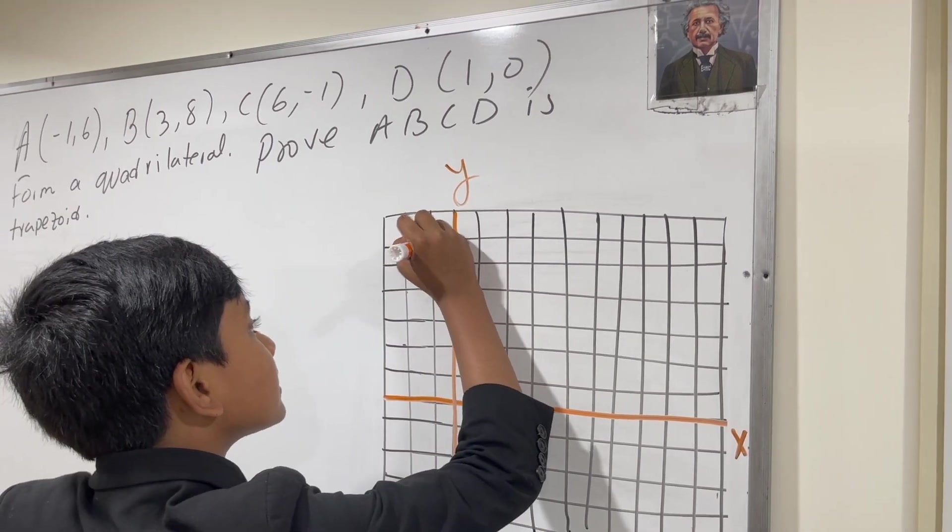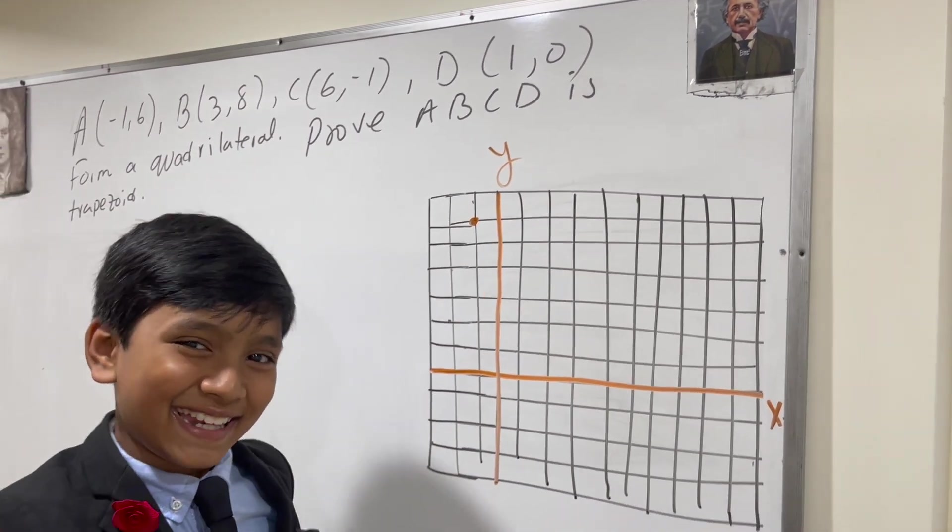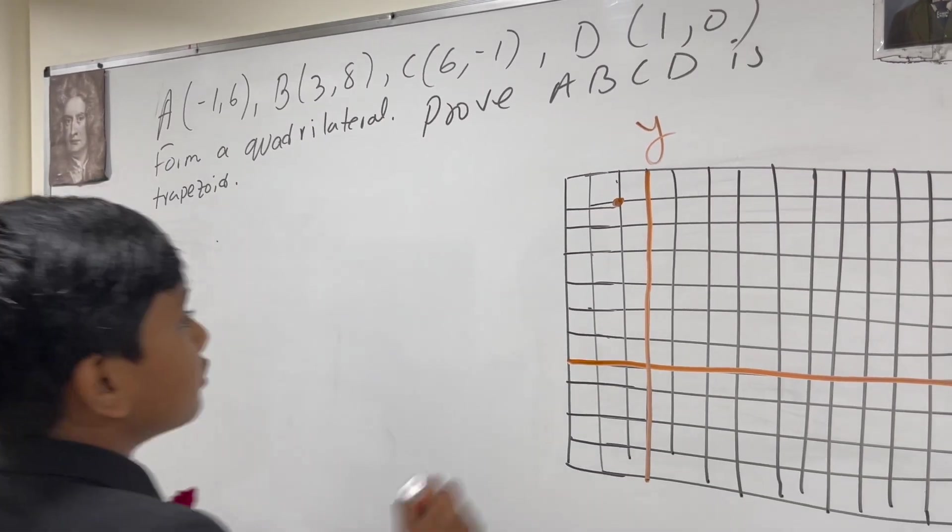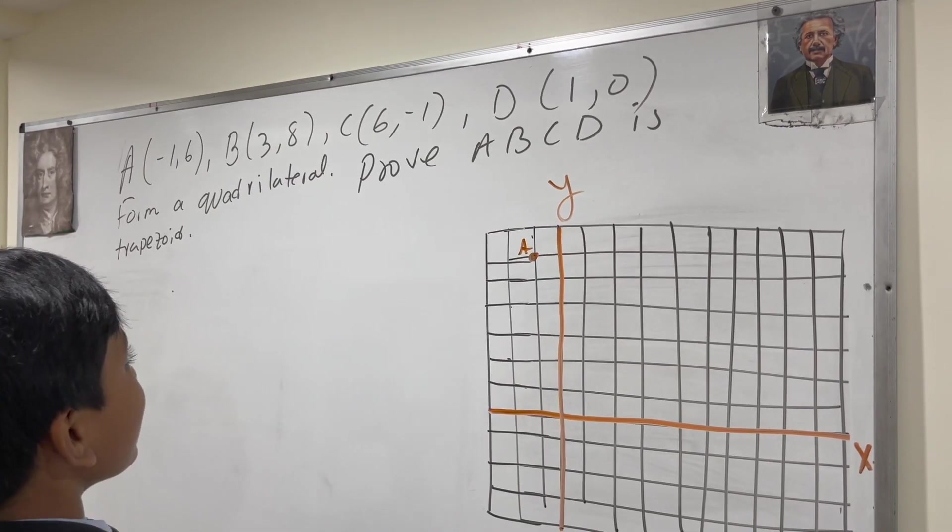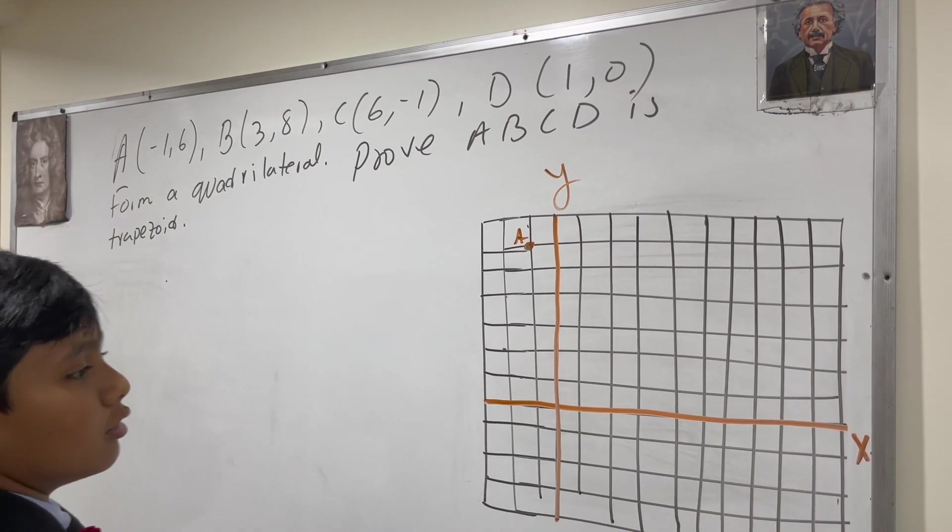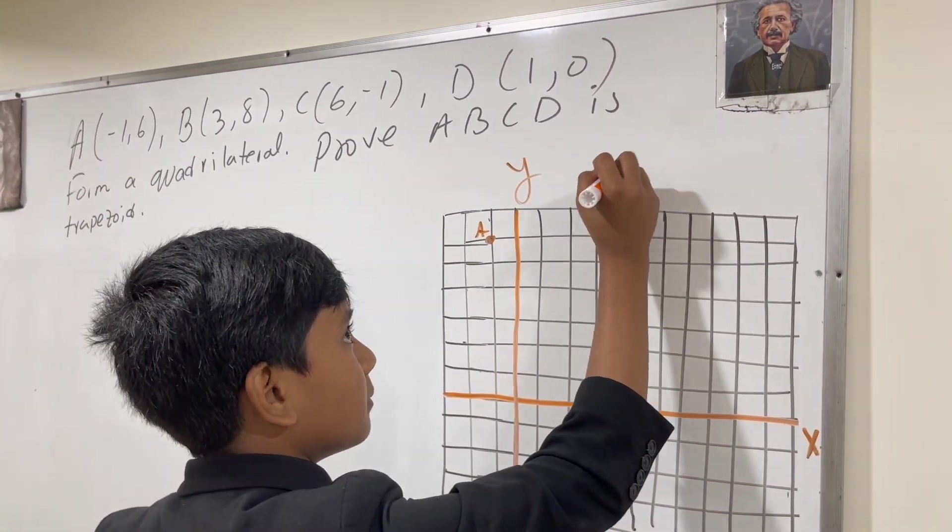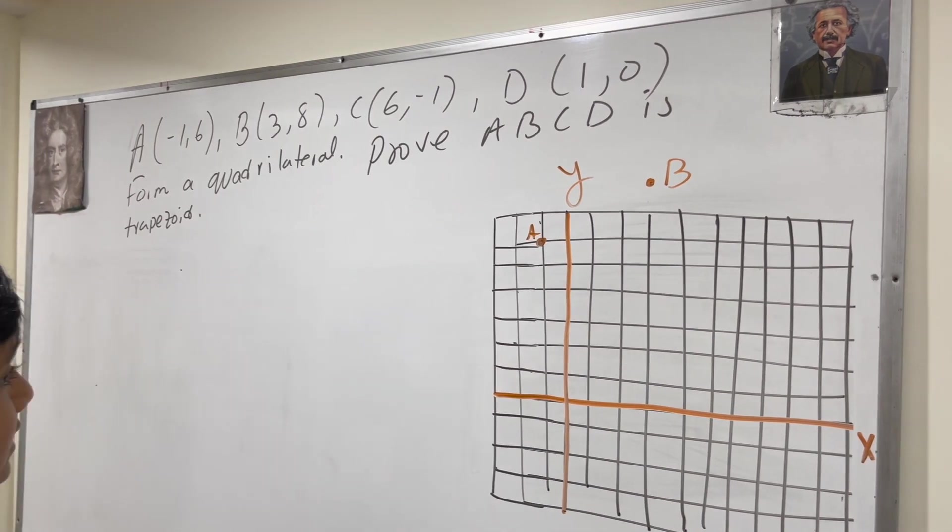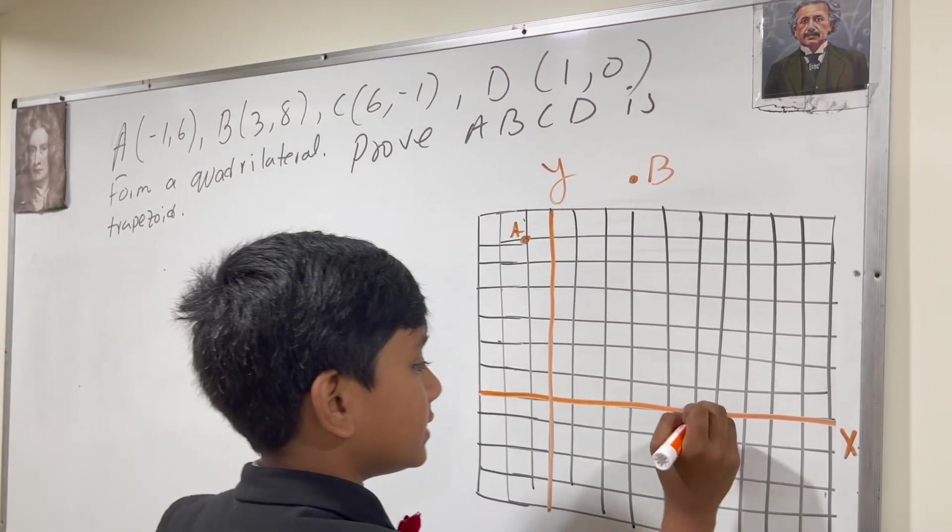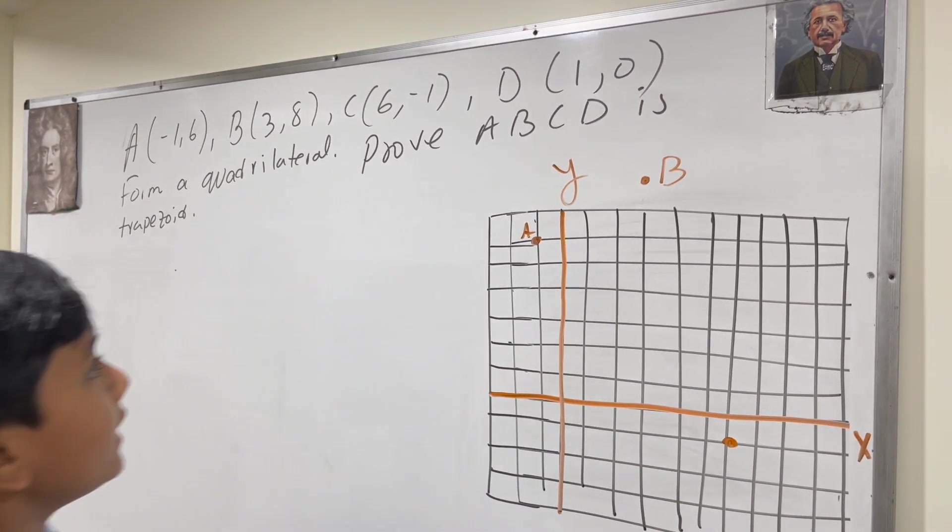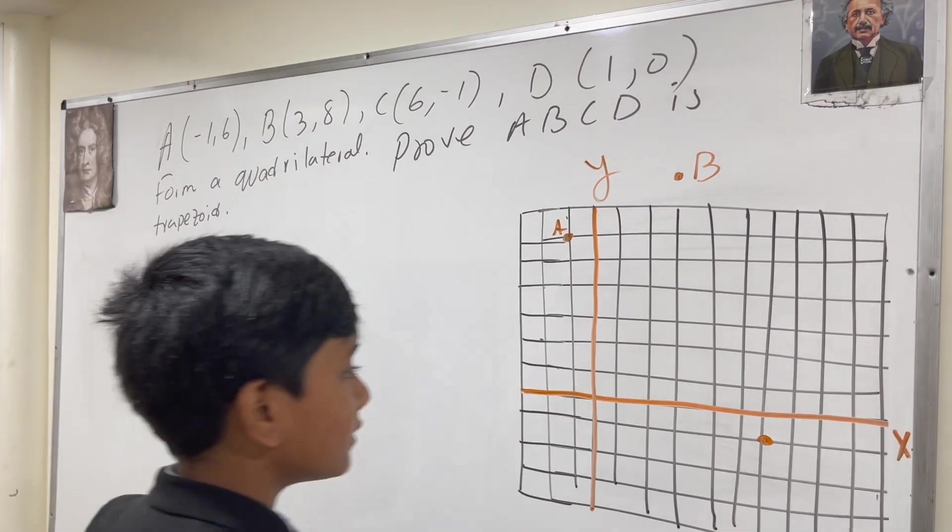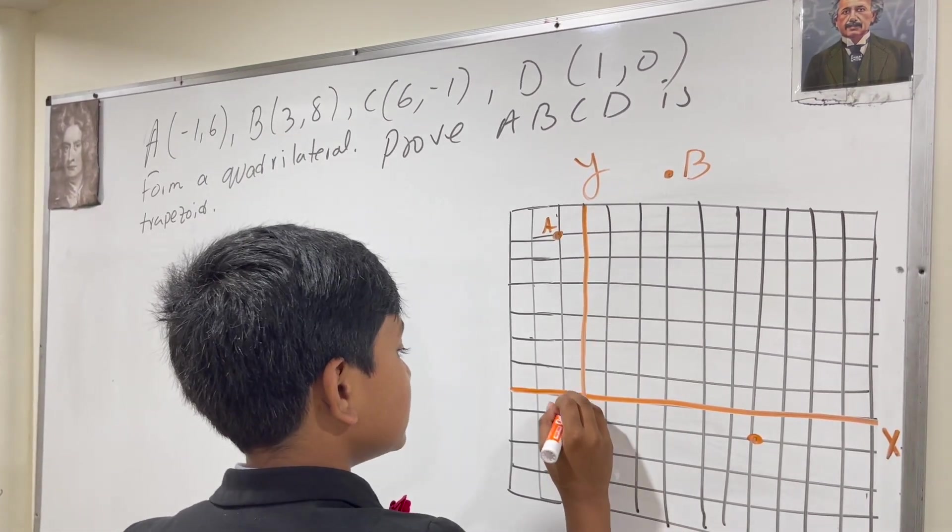3, 8. See, it's that easy! So that's A, B. 3, 8. So 3, 8 B. C. 6, 1. 6, 1. And D. 1, 0. D. 1, 0.